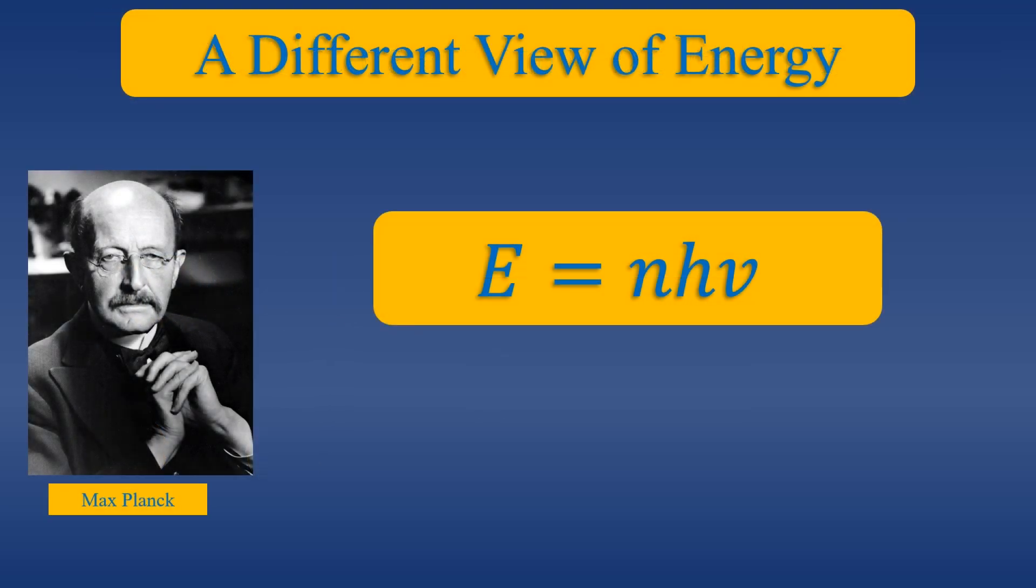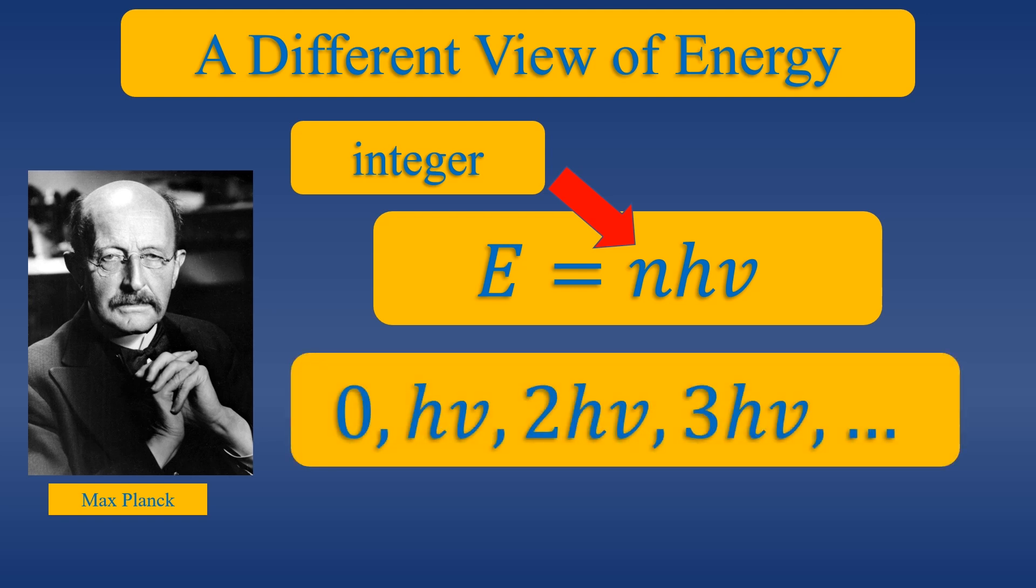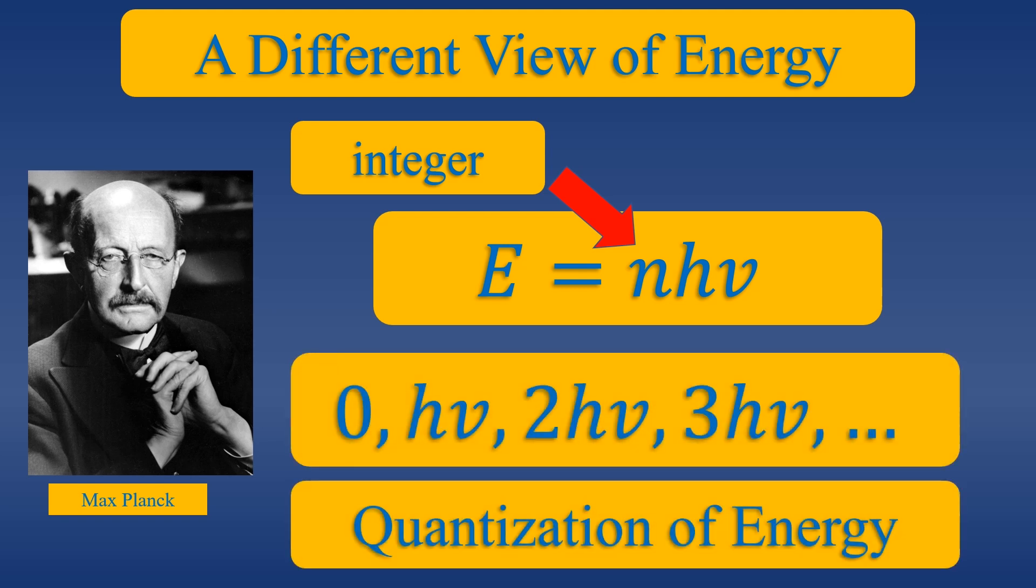The energies allowed are equal to hν, where ν is the frequency of radiation, and n are whole number integers. This is the turning point in physics history. Whereas classical mechanics predicts all energies are allowed for oscillators, the new physics suggests that only integer values of energy are allowed. This is the quantization of energy.